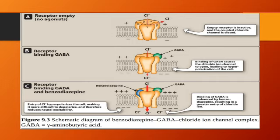This slide explains what happens when the endogenous GABA inhibitory neurotransmitter binds to its receptor, the GABA-A receptor, alone or in the presence of benzodiazepines. In figure A, the receptor is still empty, so the chloride ion channel is closed and there is no conductance. In figure B, endogenous GABA has bound to its receptor. Binding of GABA opens the chloride ion channel, which leads to hyperpolarization, making it more difficult to depolarize, thereby reducing neuronal excitability and neuronal firing, keeping it away from the next action potential.